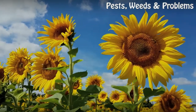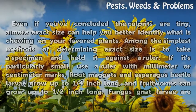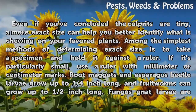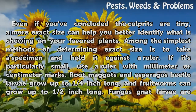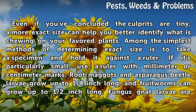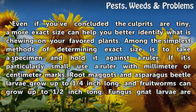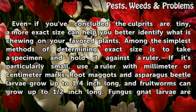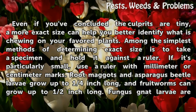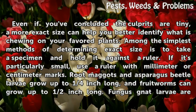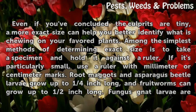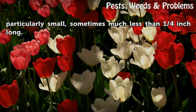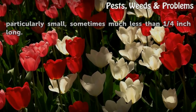Even if you've concluded the culprits are tiny, a more exact size can help you better identify what is chewing on your favorite plants. Among the simplest methods of determining exact size is to take a specimen and hold it against a ruler. If it's particularly small, use a ruler with millimeter or centimeter marks. Root maggots and asparagus beetle larvae grow up to one quarter inch long, and fruit worms can grow up to half an inch long. Fungus gnat larvae are particularly small, sometimes much less than one quarter inch long.